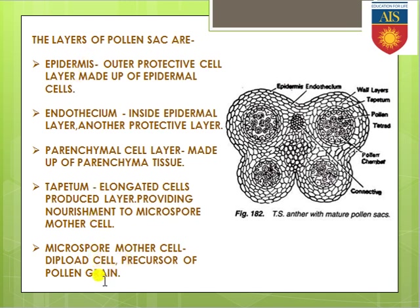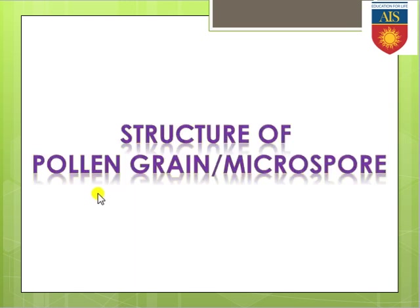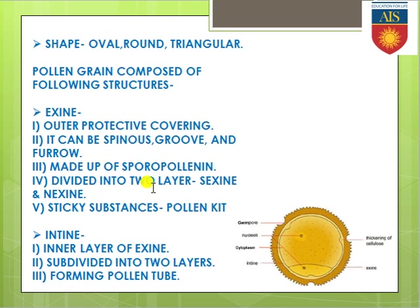These are the overall layers and structures present in the pollen sac. Now we are moving to the structure of the pollen grain, or rather the microspore structure. In the case of the microspore, the first thing to remember is their shape — they show oval, round, or triangular shape. Most pollen grains show oval or round shape; triangular shape is very rare.